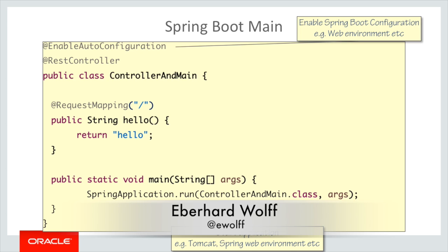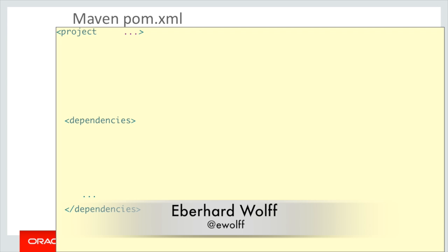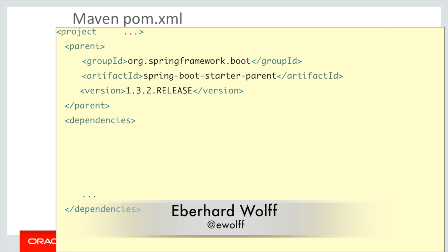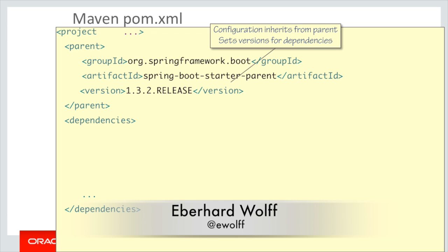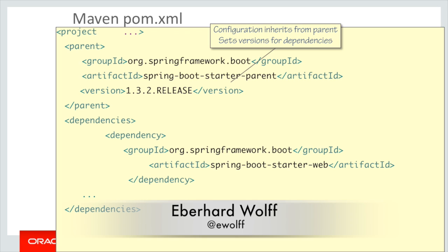What do we need to actually make that thing run? We need to have a Maven POM. That Maven POM would just have one single parent POM, which is the one provided by Spring Boot. The nice thing about this is that this is the only version you will ever see in your POM. This actually chooses a Spring stack that is compatible, and you don't need to specify any versions of the Spring framework or anything else. We have a single dependency called a Spring Boot starter, which includes everything we need for a web application. There are quite a few other starters too, for example for a messaging application.